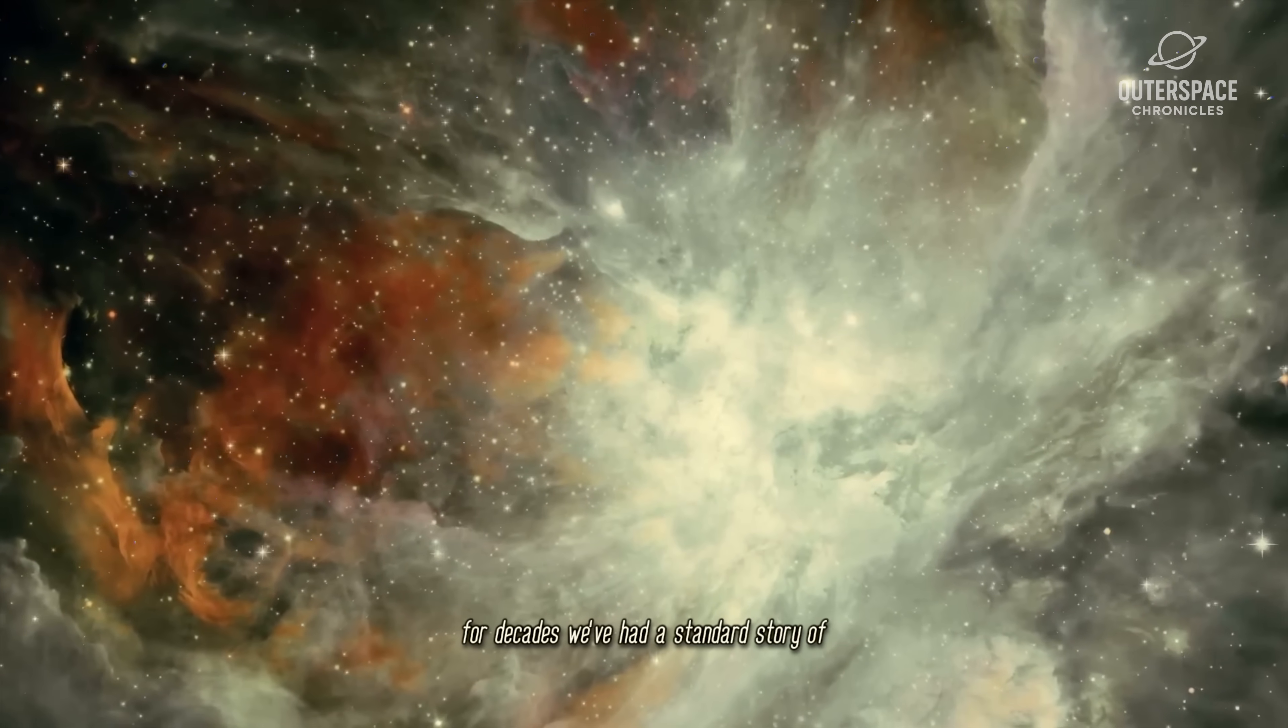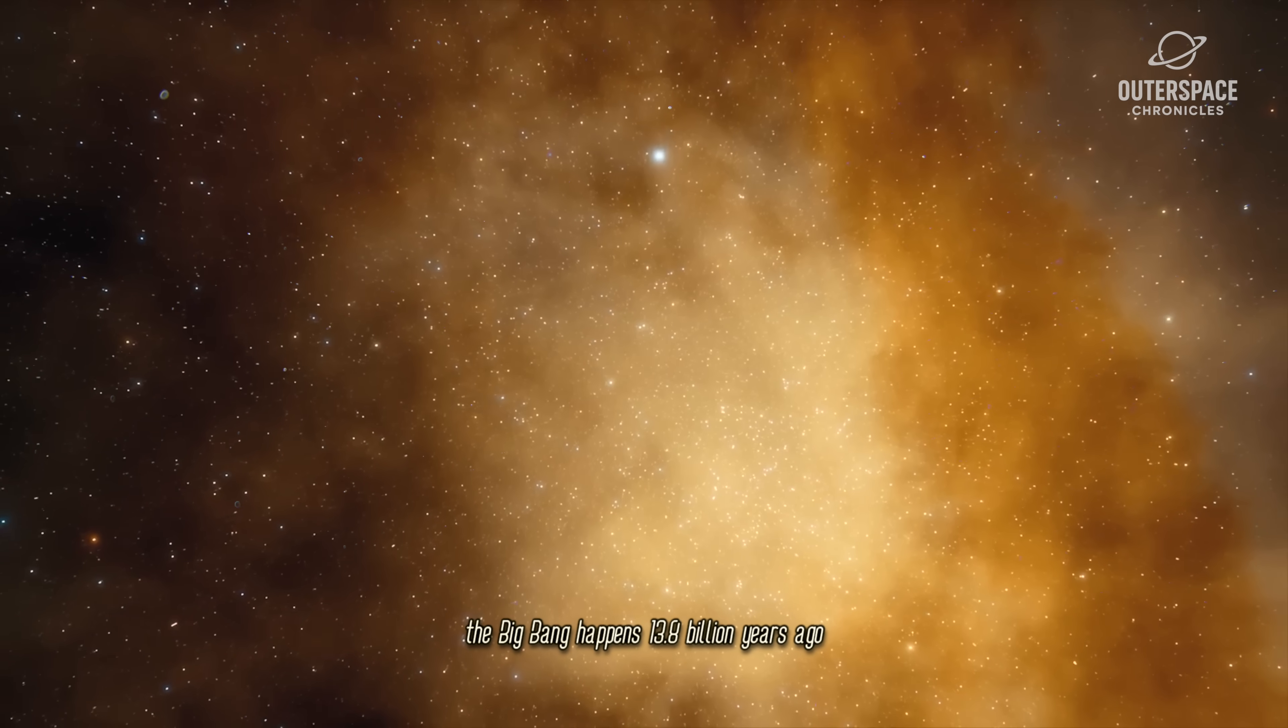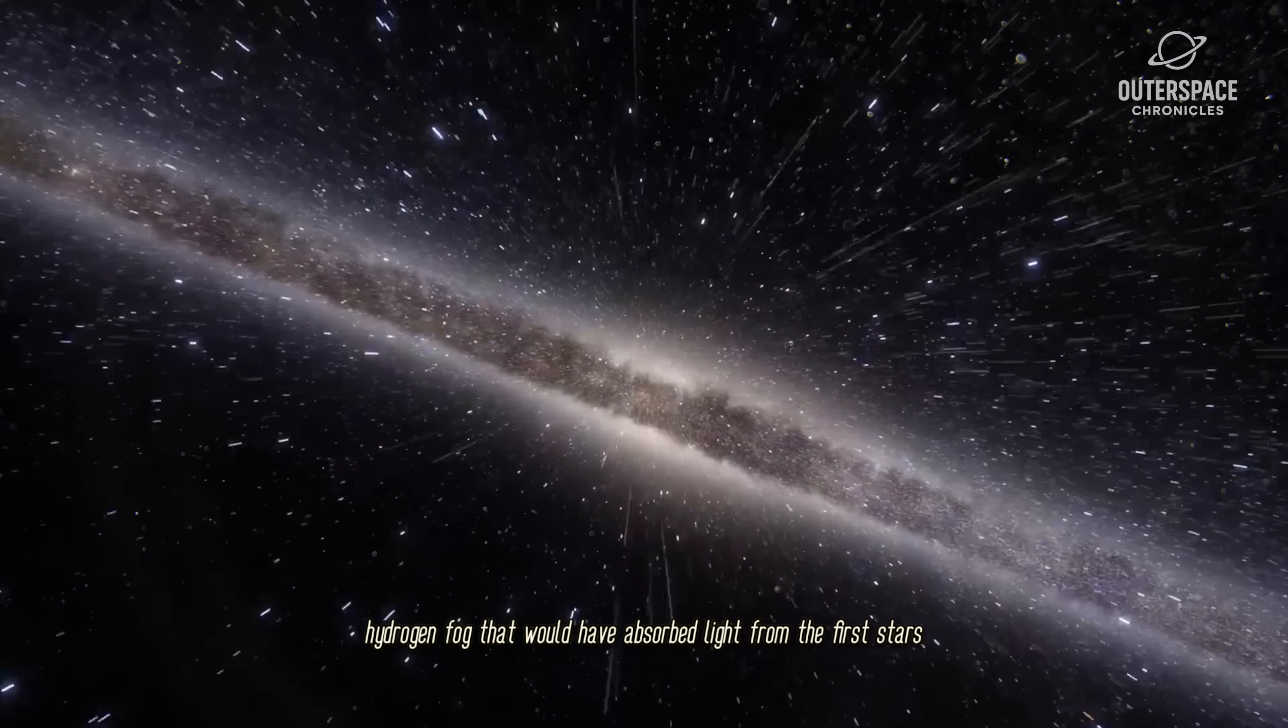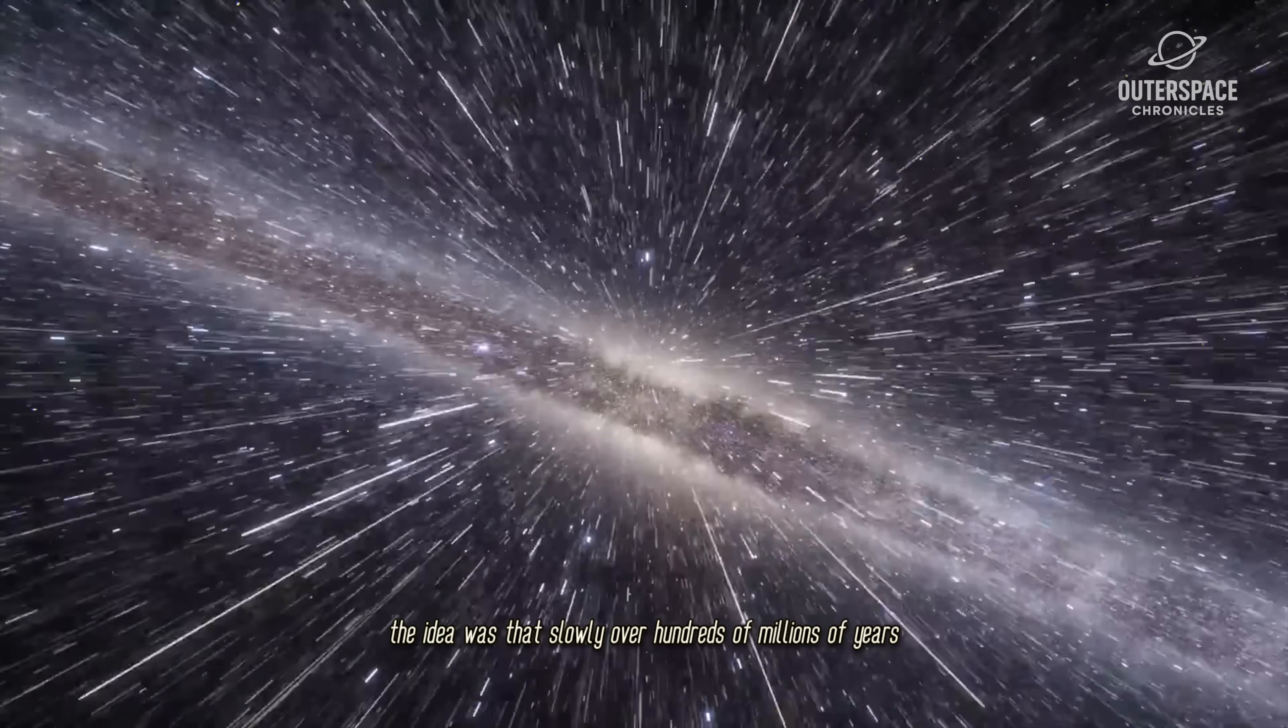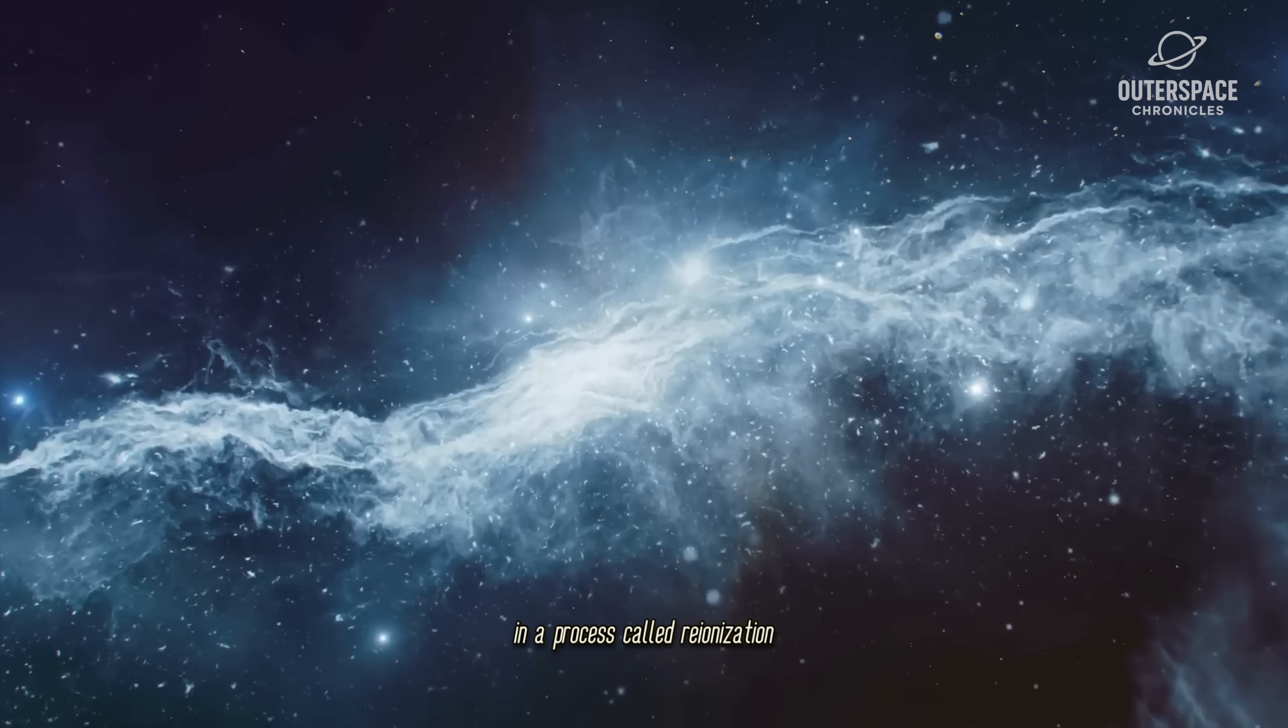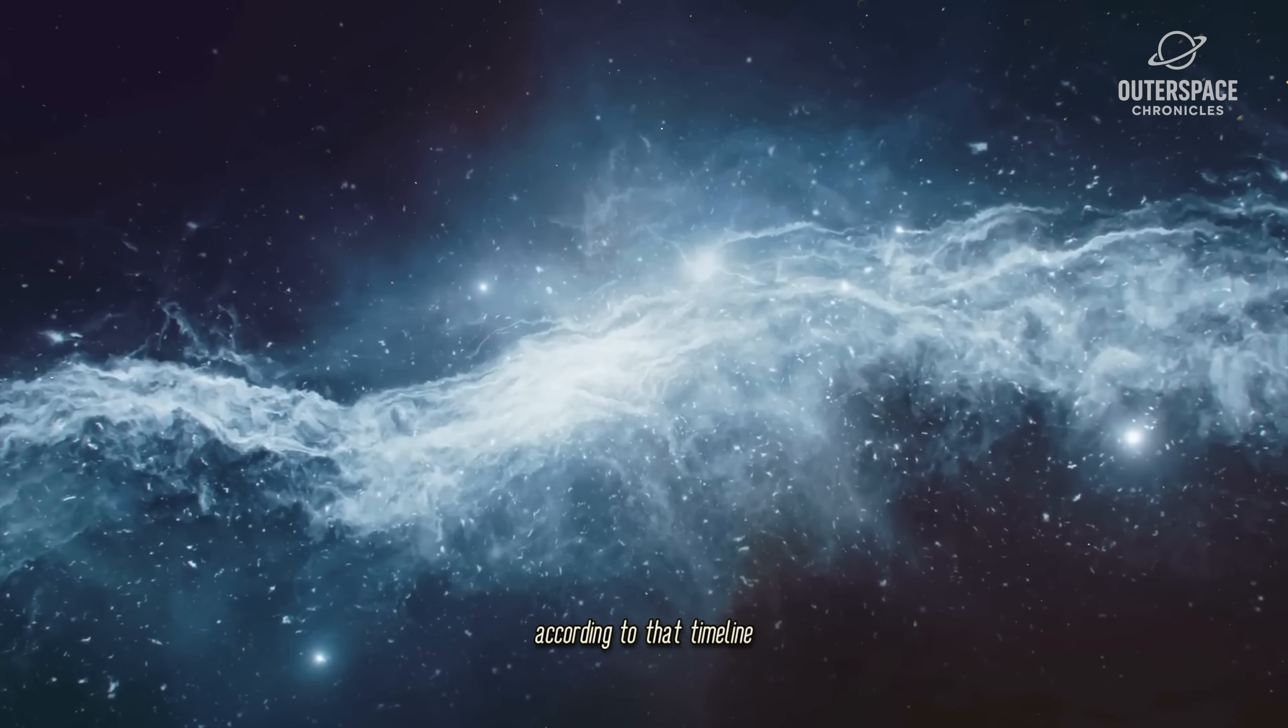For decades, we've had a standard story of the universe. The Big Bang happens 13.8 billion years ago. Then comes the cosmic dark ages, where the universe is filled with a thick, neutral hydrogen fog that would have absorbed light from the first stars. The idea was that, slowly, over hundreds of millions of years, the first galaxies would burn through this fog in a process called re-ionization. But Webb is finding galaxies that just shouldn't exist according to that timeline.